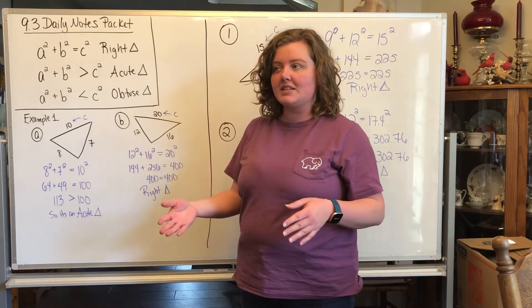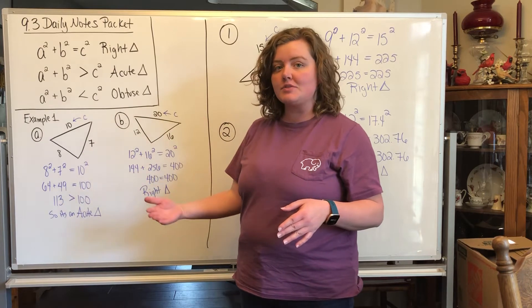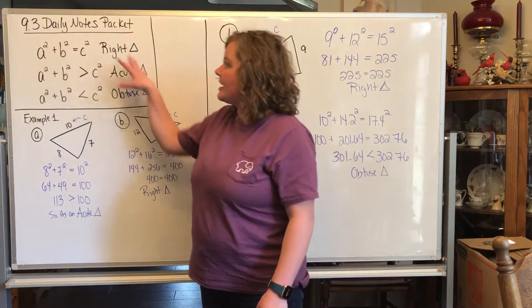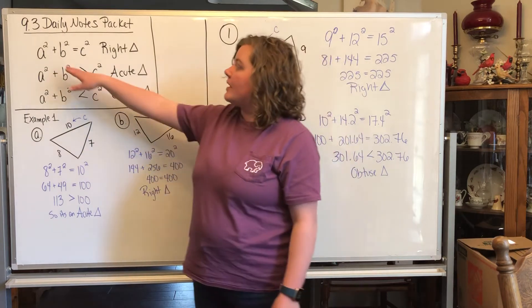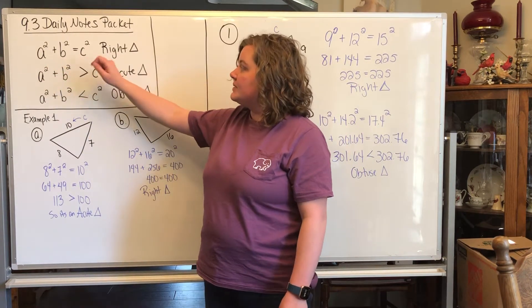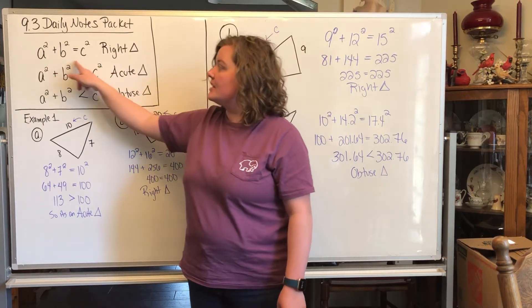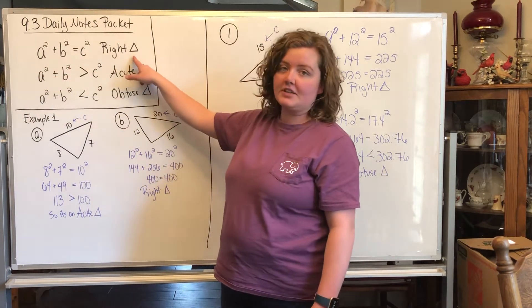but it also talks about how you can identify if things are acute or obtuse triangles. So I'm going to leave this part up here for us to look at the whole time. If you have a² + b² = c², and it solves with the Pythagorean theorem, that's only for right triangles.